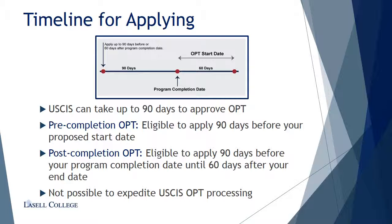USCIS can take up to 90 days to approve OPT, so it is important to apply as early as possible. For pre-completion OPT, you are eligible to apply 90 days before your proposed start date of employment. For post-completion OPT, you are eligible to apply 90 days before your program completion date until 60 days after your program completion date, which is the end date on your I-20. It is not possible to expedite OPT processing and you should not contact USCIS.